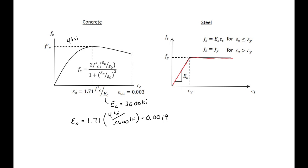We use this epsilon-nought value with the Todeschini expression to relate stress to strain for our concrete. For our steel, using the elastic perfectly plastic model, we were given a modulus of elasticity of 29,000 KSI, a yield strength of 60 KSI, and a yield strain of 0.00207. We'll use these values throughout the example problem.